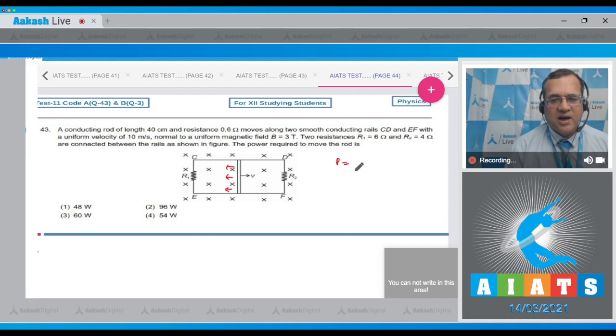the power generated, which equals E² divided by the equivalent resistance. To calculate E, the EMF induced equals BLv. With B = 3 tesla, length L = 0.4 meters, and velocity v = 10 m/s,